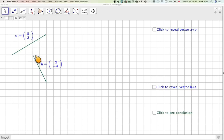And we've got the vector B, which is 2 minus 4. So that means for every 2 along, we're going to go down 4.